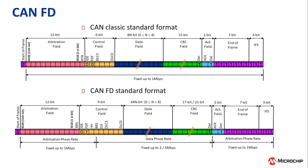The CAN FD standard, however, only goes up to 5 Mbps. In comparison, classic CAN is limited to 1 Mbps.